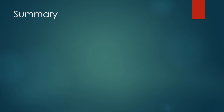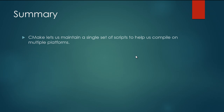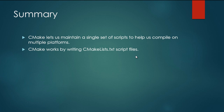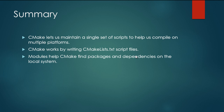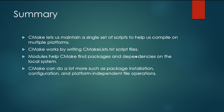To wrap up what we've done in the last few videos, we basically learned that CMake lets us maintain a single set of scripts to help us compile on all the platforms. We can work with CMake by writing a series of CMakeLists script files that CMake uses to control how your plugin will be compiled. We learned that modules can help CMake find all the packages and dependencies on the local system — that's where we wrote our FindMaya.cmake module. And we learned that CMake can do a lot more, such as working with package installation in different configurations and performing platform-independent file operations.